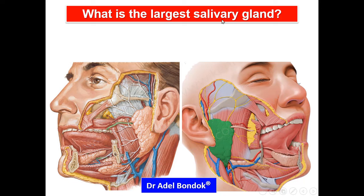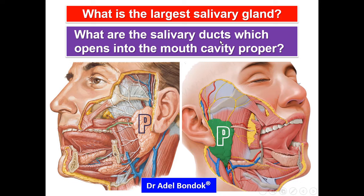What is the largest salivary gland? The largest salivary gland is the parotid gland. The submandibular and the sublingual ducts open into the mouth cavity proper, while the parotid duct opens into the vestibule.